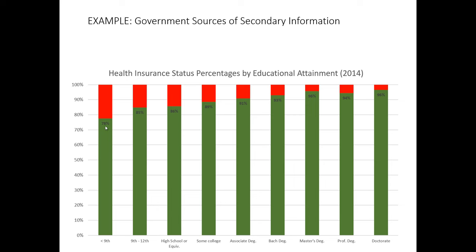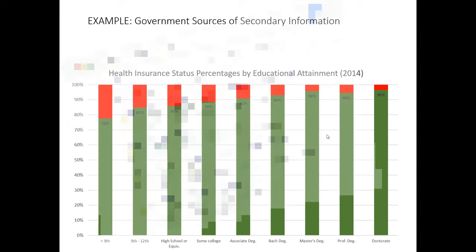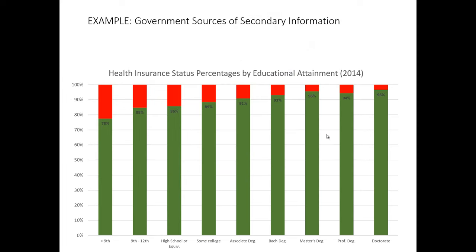For example, people who have less than a ninth grade education — 78% of them had health insurance, 22% did not. Those with professional degrees, master's degrees, and doctorate degrees have around 95%. So this is just one example of a government source that can be useful to a marketer. Obviously, marketers selling healthcare on the new healthcare exchanges would be very interested in knowing which types of individuals are more or less likely to be presently insured, and government tools can provide that type of information.